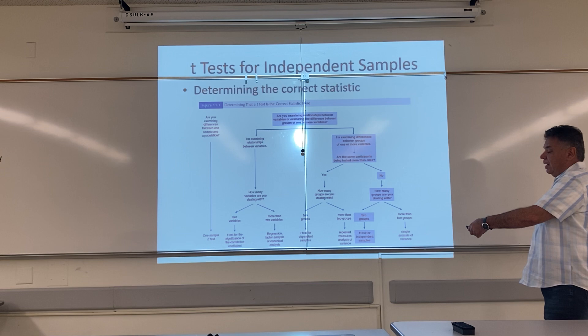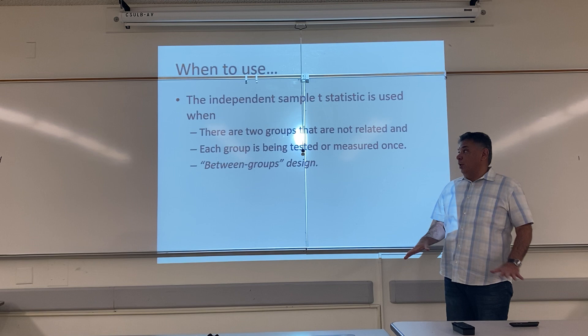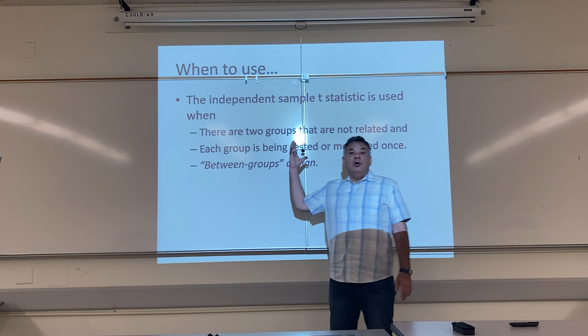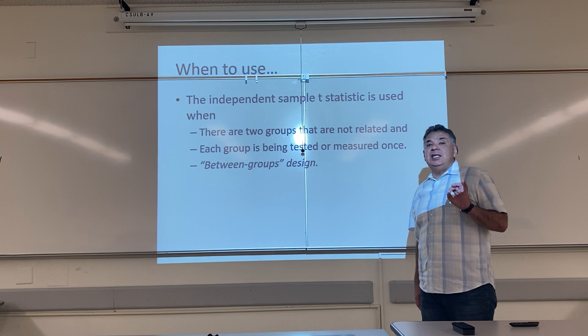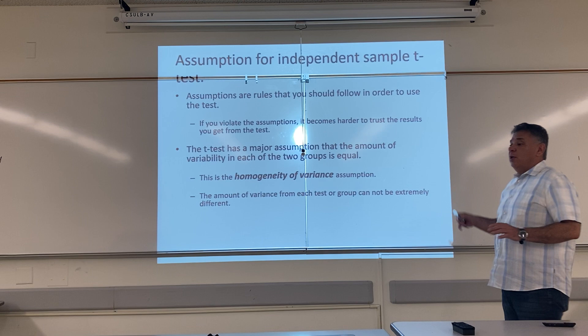So we've determined that this is the right test to use. The independent sample t-test is used when you have two groups that are independent — that means they're not related, they're separate. Each group is being tested or measured only once, and we want to know: is there a difference between the groups? So these are also known as between groups designs. Whenever you want to know if there is a difference among the groups, you're doing a between groups design.